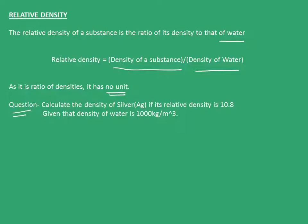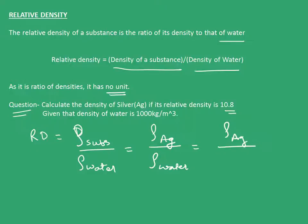We'll see a question and end the chapter on gravitation. Calculate the density of silver if its relative density is 10.8, given that the density of water is 1000 kg/m³. We know relative density = (density of substance)/(density of water). We have to find the density of silver (Ag).